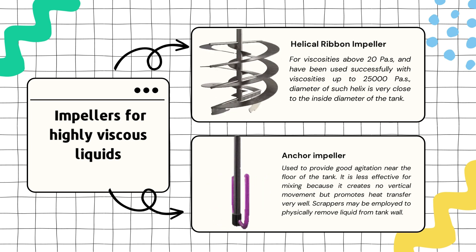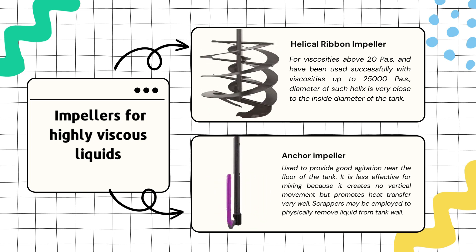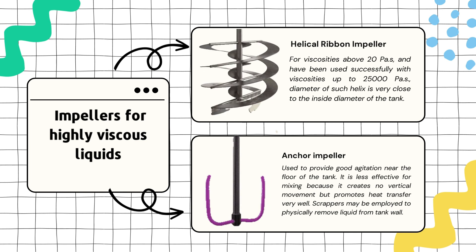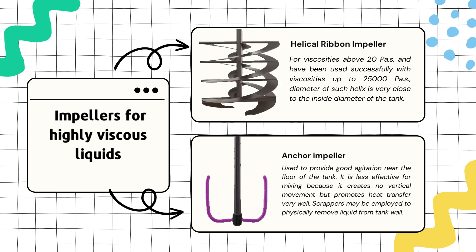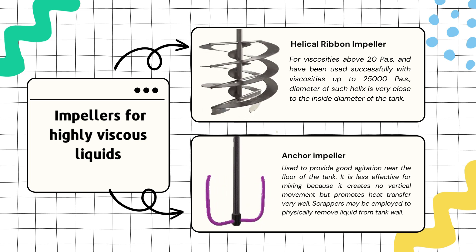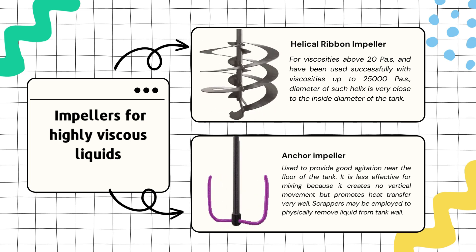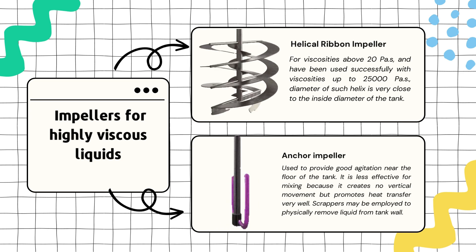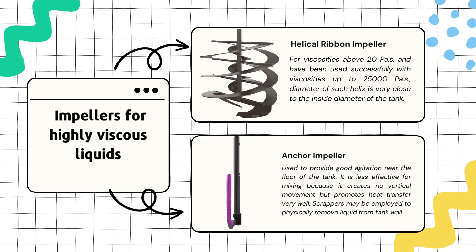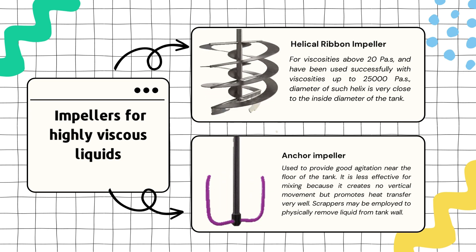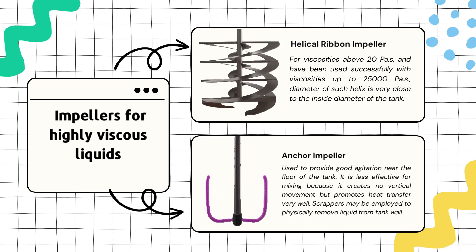The next type of impeller used for high viscous liquids is the anchor impeller. Anchor impellers are designed to provide good agitation near the bottom of the tank. They don't create much vertical movement but are excellent at promoting heat transfer. Sometimes scrapers are added to physically remove the liquid from the tank's wall.